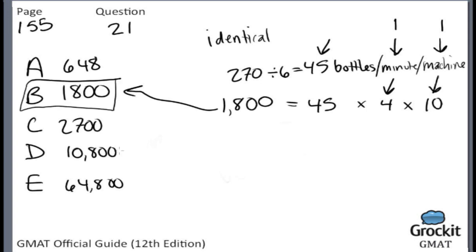Note that some of the wrong answer choices have the right numbers in them, assuming you'll do the math wrong. It doesn't quite rise to a super tricky trap, but if you're being careless with your numbers this is the sort of thing that might jump out at you. Since we are careful test takers, it did not catch us. We shall move on to question number 22.